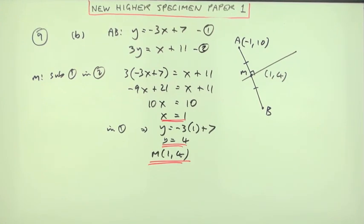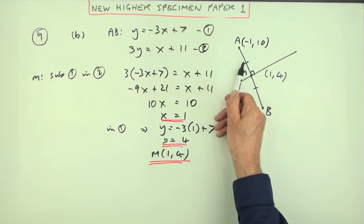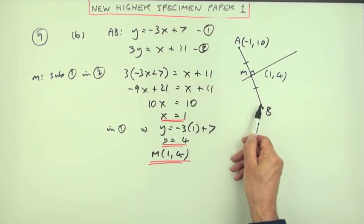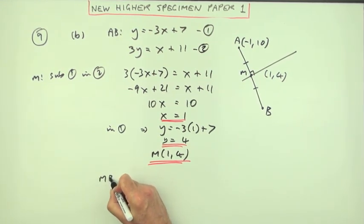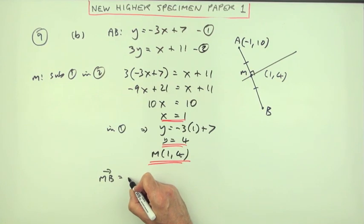So M is the point (1, 4). Now that you know M is the point (1, 4), you've got two ways of finding B. The simplest is just to use the displacement. Whatever the move it takes to get from A to M, it'll be the same move to get from M to B.